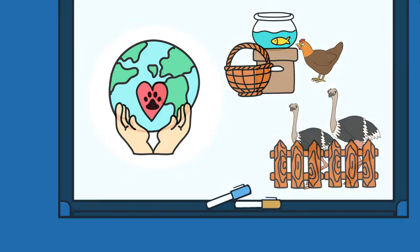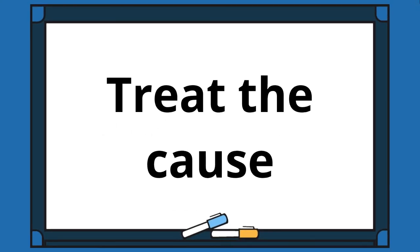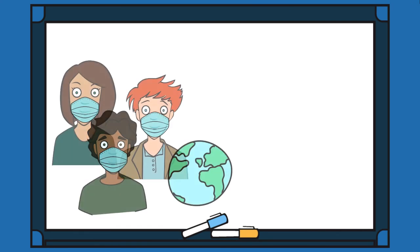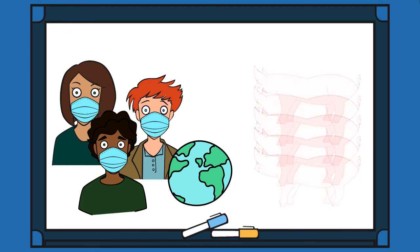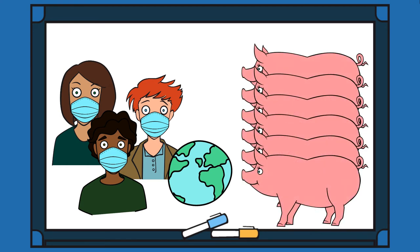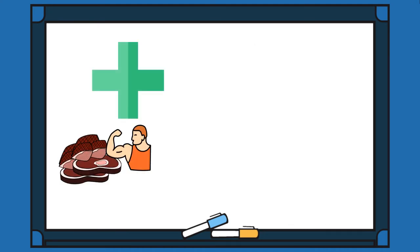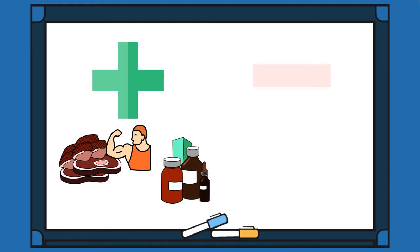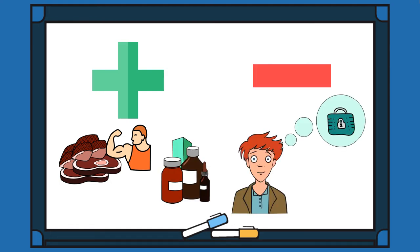When a new disease arises, or any new issue really, human beings are most adept at treating the symptoms but tend to neglect the underlying cause. This makes it difficult to introduce real change. For example, as long as people believe that wildlife meat is better quality and great for natural remedies, and remain ignorant of the drawbacks, the situation will not improve.